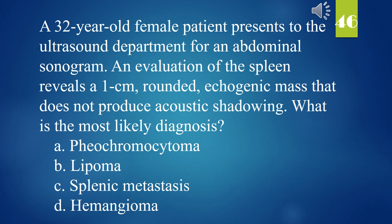A 32-year-old female patient presents to the ultrasound department for an abdominal sonogram. An evaluation of the spleen reveals a 1 cm, rounded, echogenic mass that does not produce acoustic shadowing. What is the most likely diagnosis? A. Pheochromocytoma. B. Lipoma. C. Splenic metastasis. D. Hemangioma. The answer is D. Hemangioma.